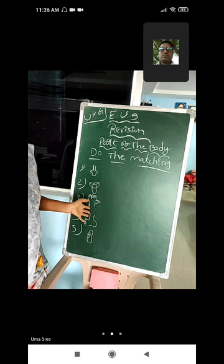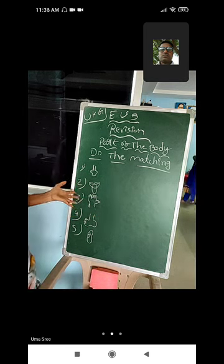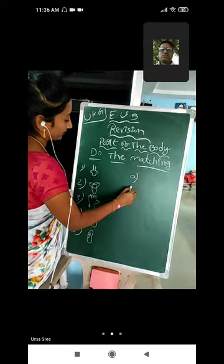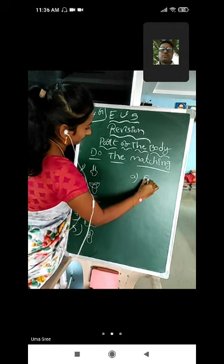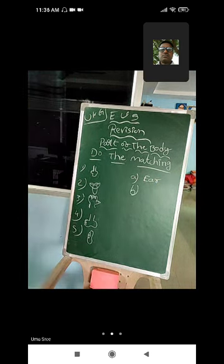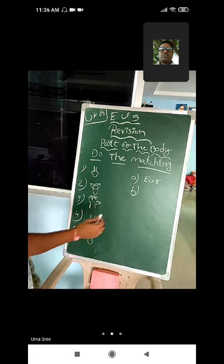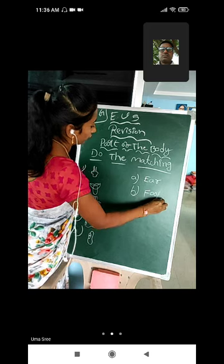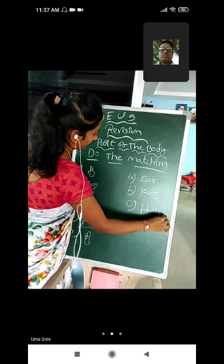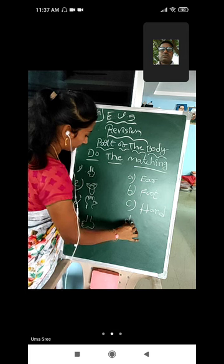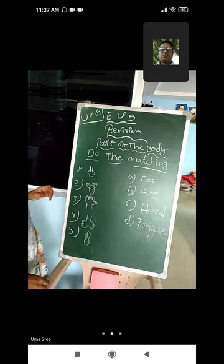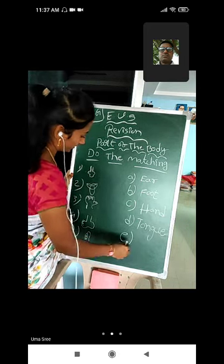One side I will give pictures, other side I will give the options with the name. Option A: ears — E, A, R, S. Option B: foot. Option C: hand. Option D: tongue — T, O, N, G, U, E. Option E: nose — N, O, S, E.